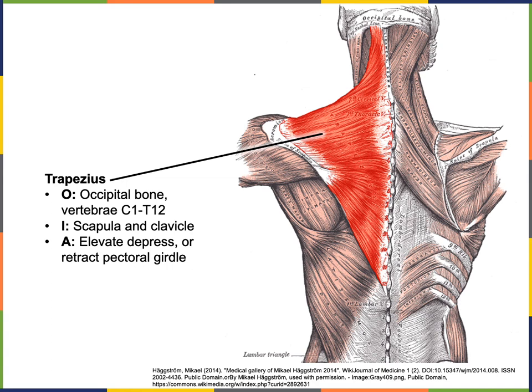The trapezius has an origin all along the midline from the occipital bone down along the vertebrae from C1 to T12. The insertion is on the scapula and clavicle, enabling the action of elevation or depression of the pectoral girdle, and also retraction of the pectoral girdle.